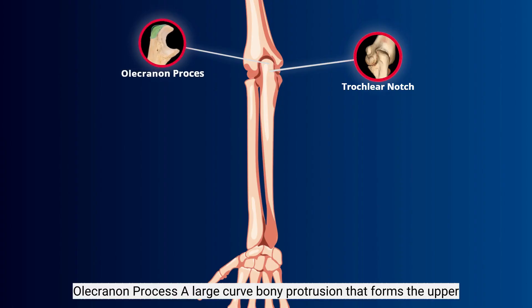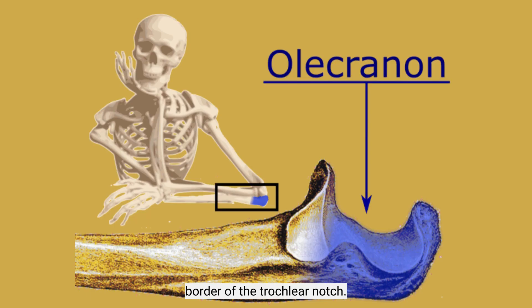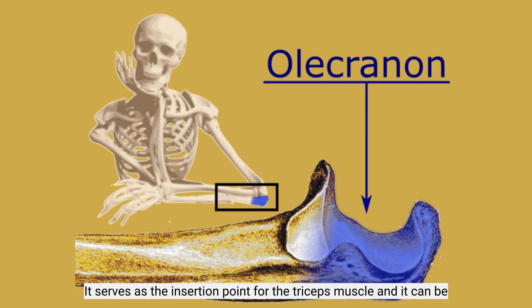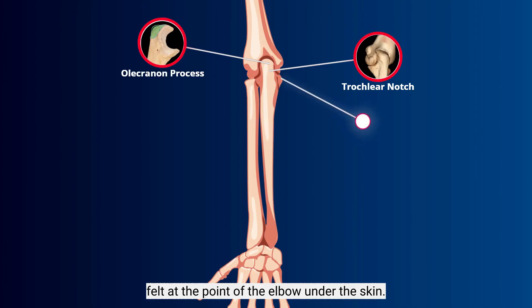Olecranon process: a large curved bony protrusion that forms the upper border of the trochlear notch. It serves as the insertion point for the triceps muscle and it can be felt at the point of the elbow under the skin.